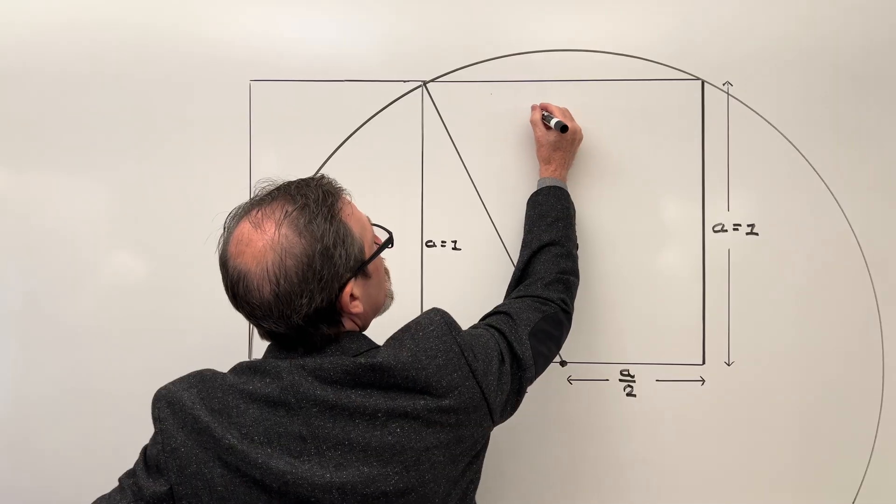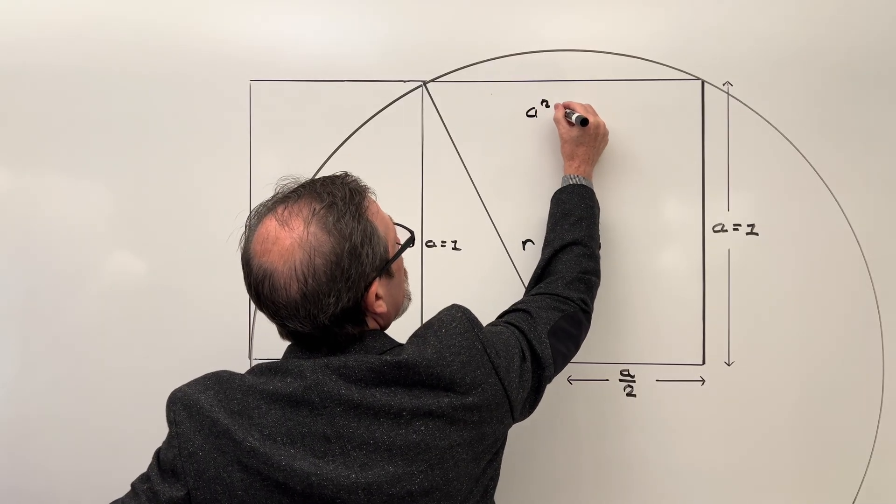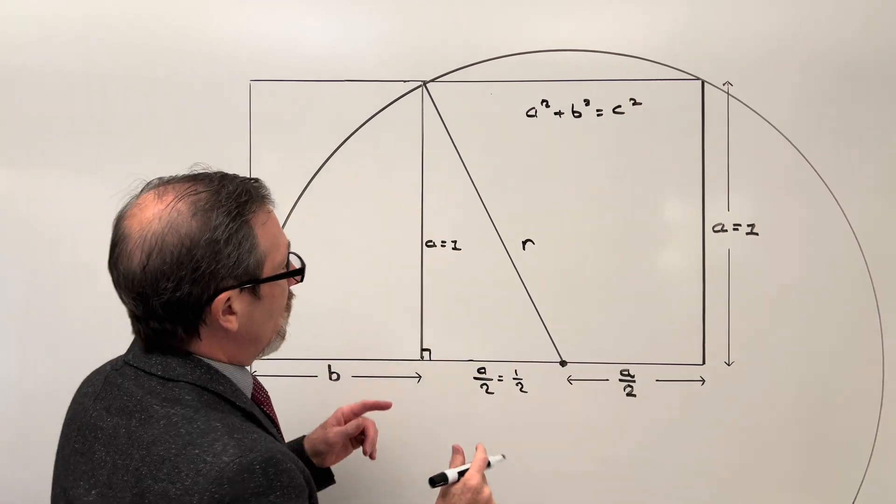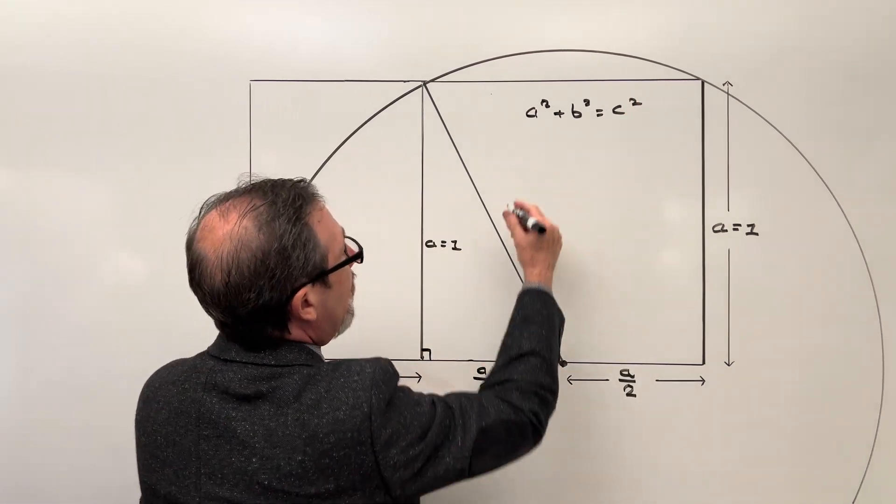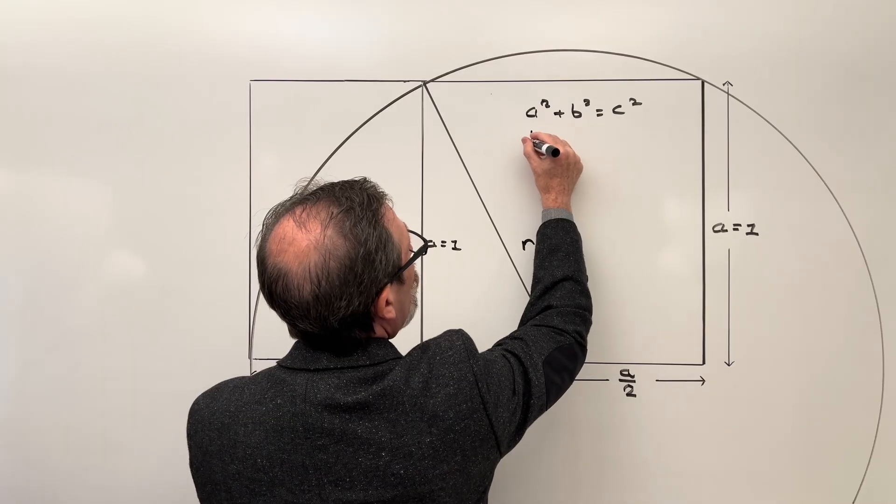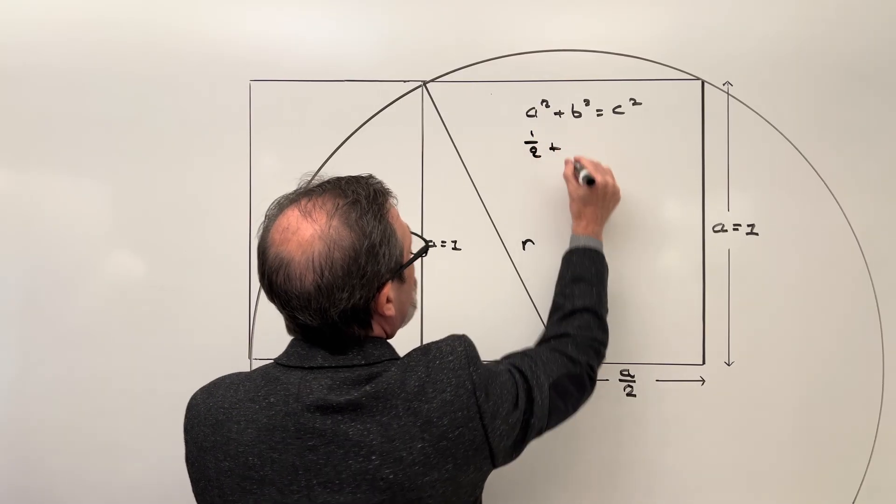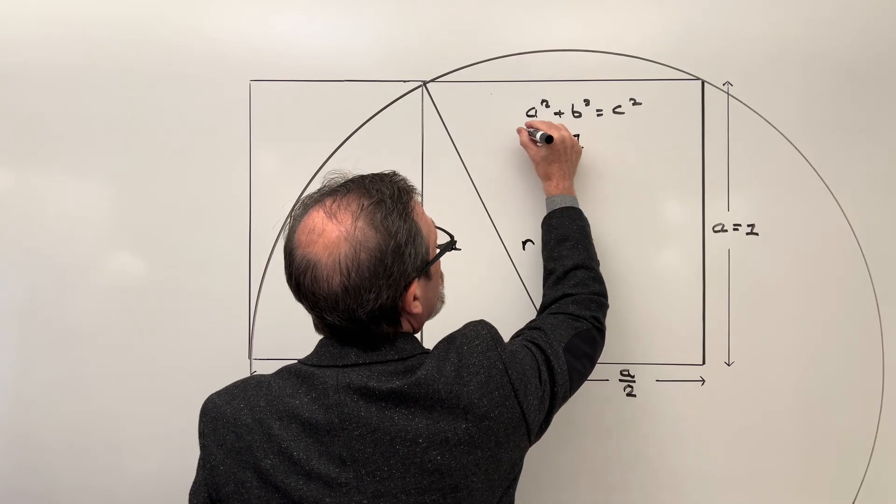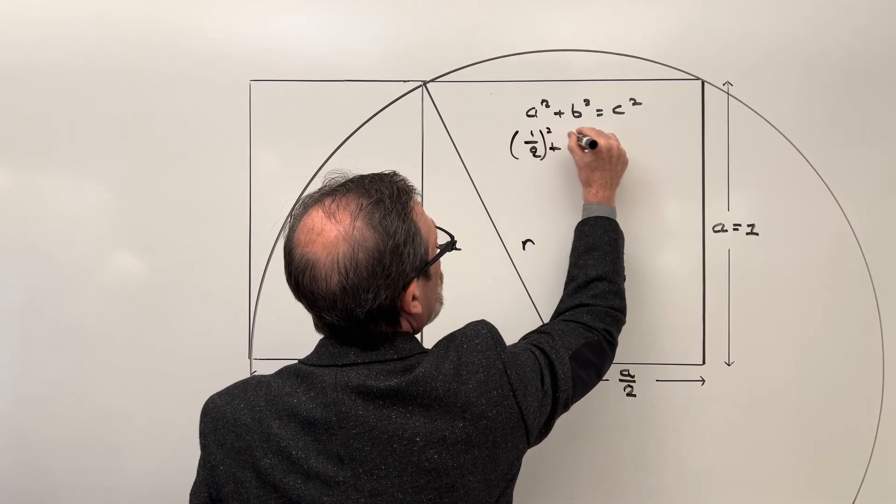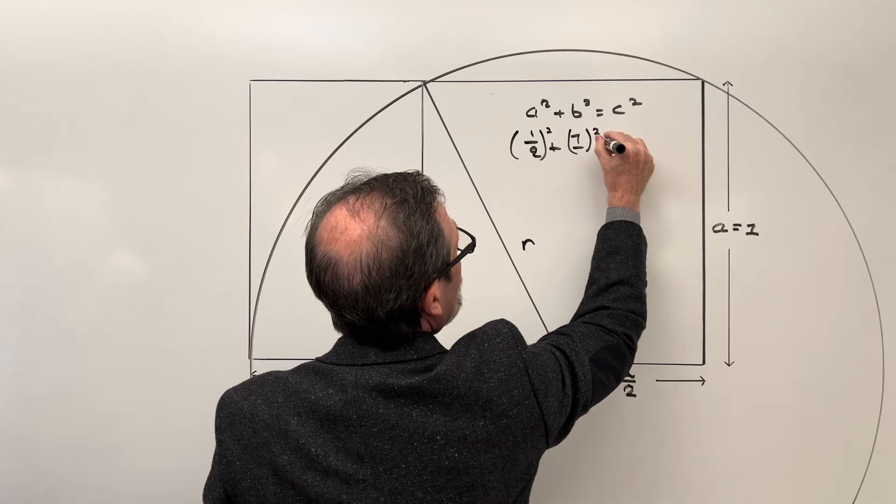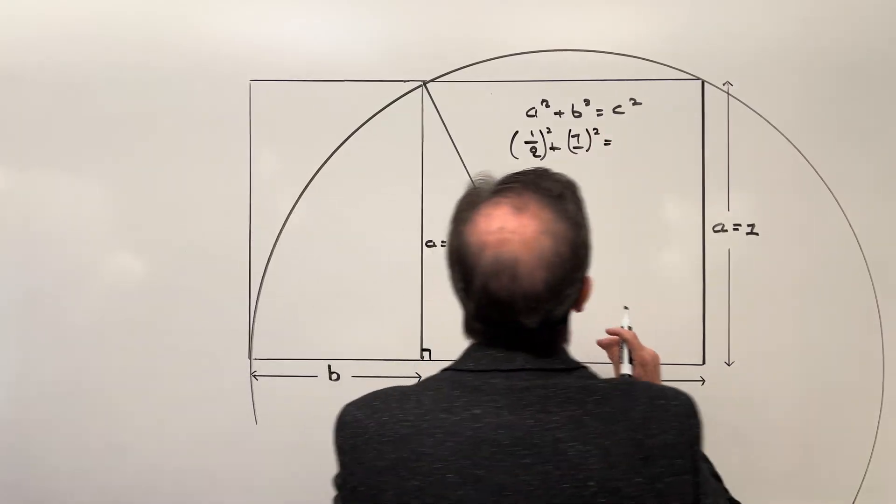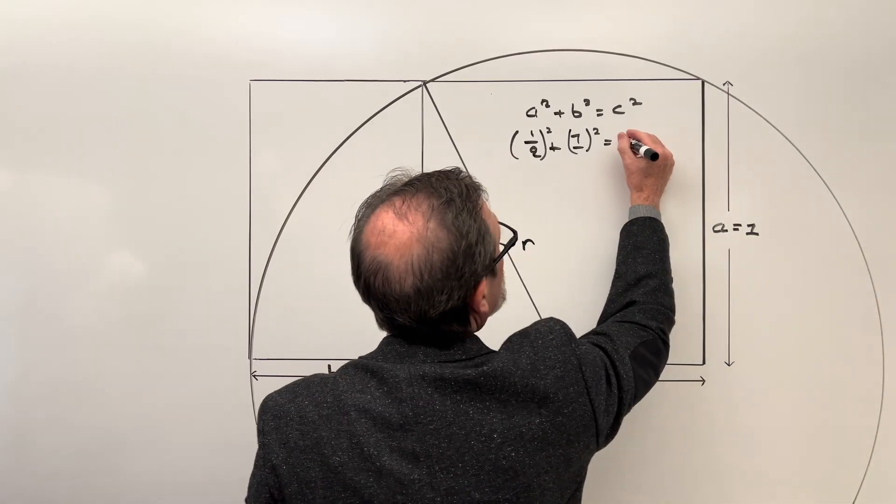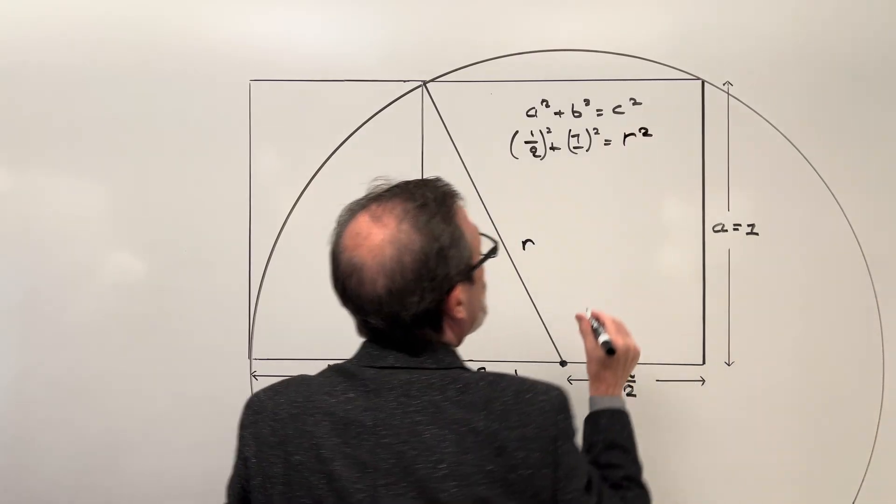So let's write this out. We'll invoke Pythagoras. We'll say A squared plus B squared equals C squared. In this case we'll call this side A. So we'll say we have 1 half plus 1 and these are both going to end up having to be squared equals instead of calling it side C. Let's call it what it is which is the radius. So we could say that's going to be equal to our radius squared.